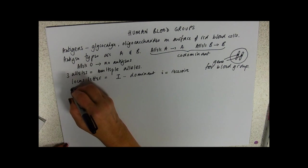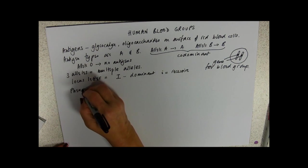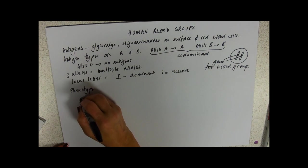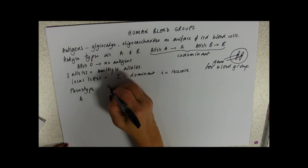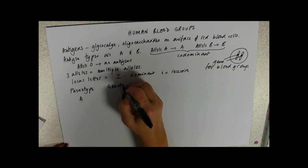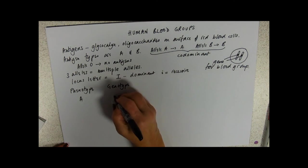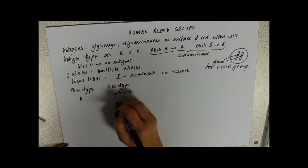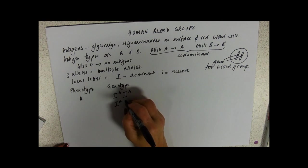So phenotype is our appearance. So you could have blood group A, and your genotype then, as a dominant allele, expressed in the homozygous condition and in the heterozygous condition.